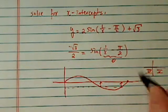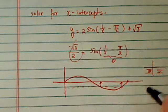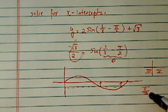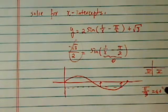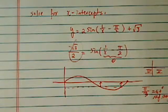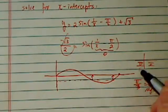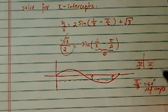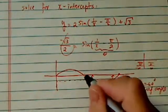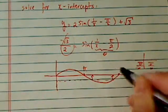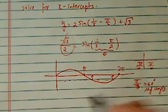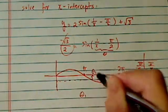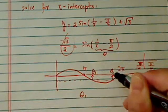The reference angle for this value is 60 degrees, or pi over 3. Since we're located in quadrant 3 and quadrant 4, we're going to find those two angles — theta 1 and theta 2.